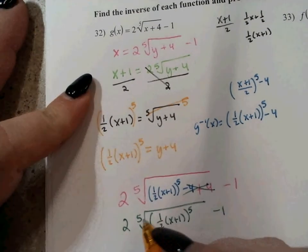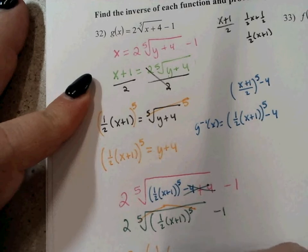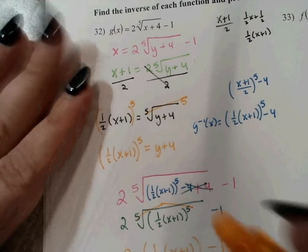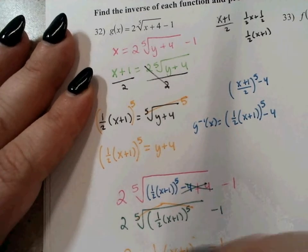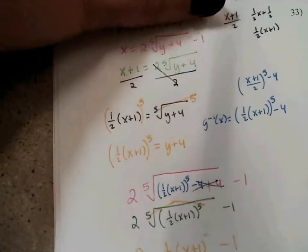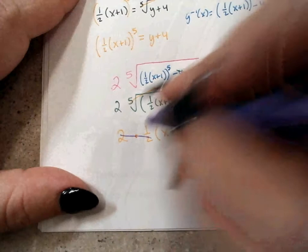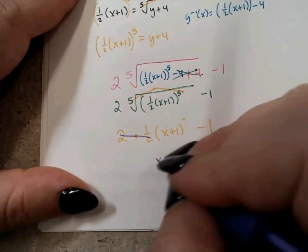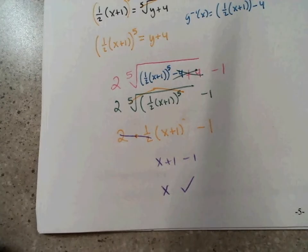The reason I didn't put parentheses around it is because I wasn't multiplying — I was just adding. So the first thing that simplifies is those 4s. Then I've got 2 times the fifth root of the quantity 1 half x plus 1 to the fifth power, minus 1. The fifth root and fifth power cancel. So it's 2 times 1 half times x plus 1, minus 1. The 2 times 1 half becomes 1, leaving x plus 1 minus 1, which is just x. So they are inverses.